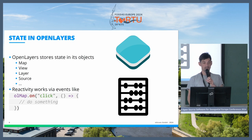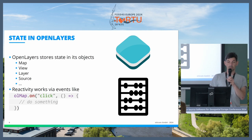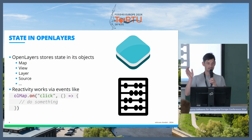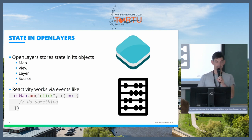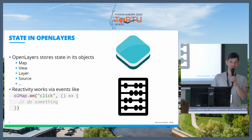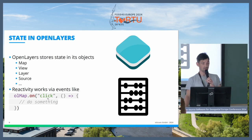In OpenLayers, every OpenLayers object also has its own state. For example, a map has a state, a view has a state, layers have a state — and you can react to those states. For example, if a map is clicked or a layer is added or removed, you can react to this via events. You have the name of the event and then a callback function.